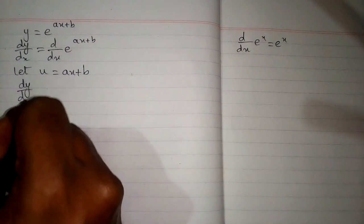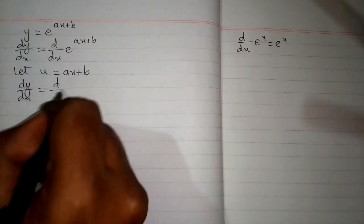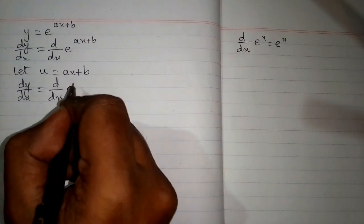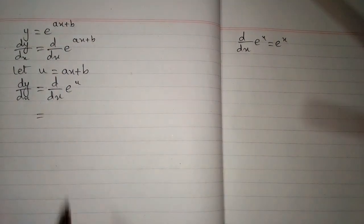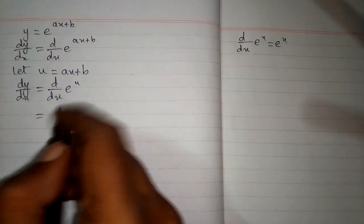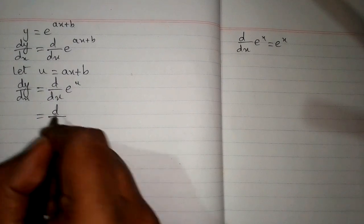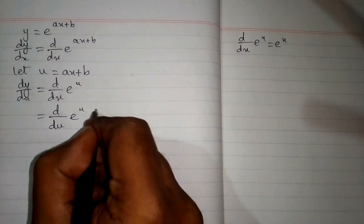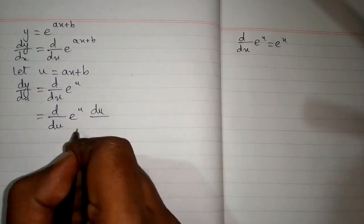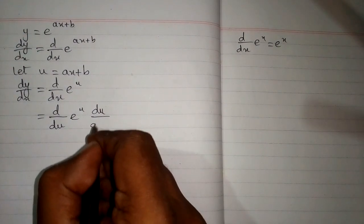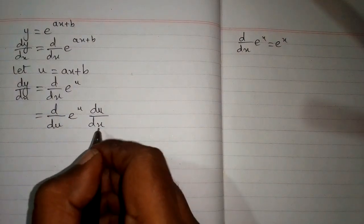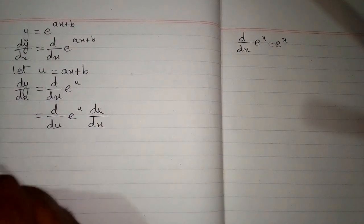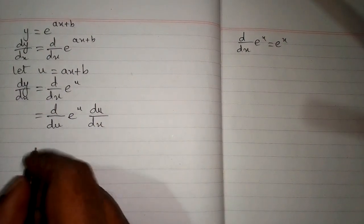So dy by dx equals d by dx of e to the power u. Now again, these two things are not the same and we must have du in place of dx. So to balance this, we will multiply it by du by dx so that we have dx again over here. This is called the chain rule of differentiation.